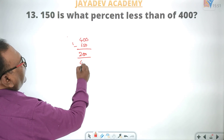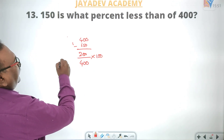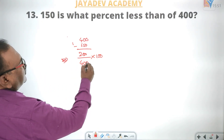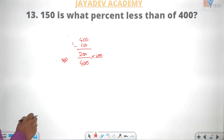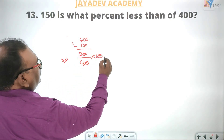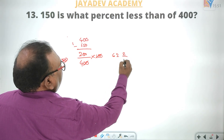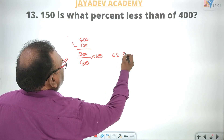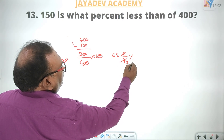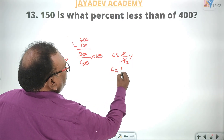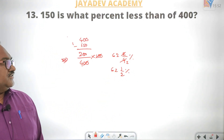So 250 divided by 400, into 100. Zeros cancel. 2 by 4, so 62 and 1/2 percentage. The answer is 62½%.